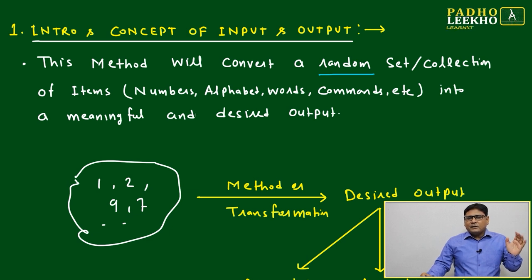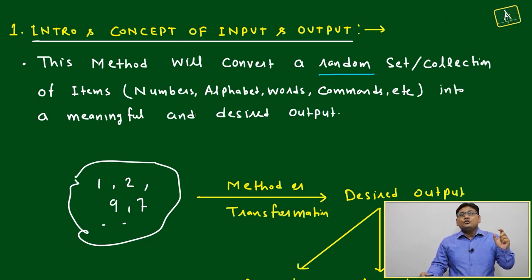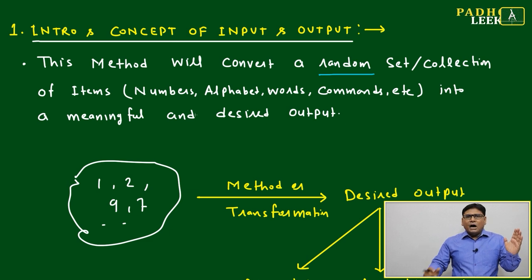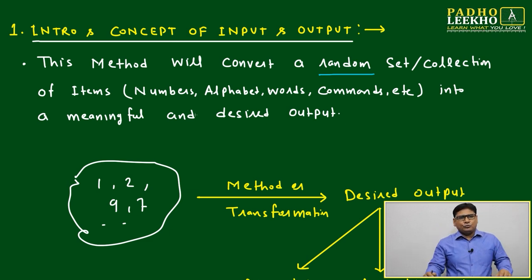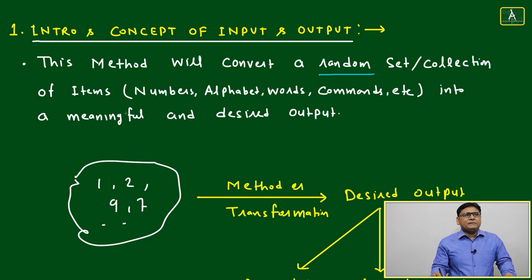If you are a programmer, this is one of the fundamental knowledge you must know: what is the input and what is the output. Based on any particular input, how you can convert to a desired output. We can keep many things in place of these items - numbers, alphabet, words - into a meaningful and desired output.